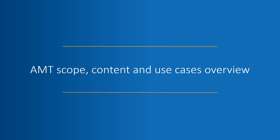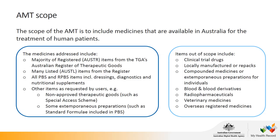Moving on to AMT scope, what it contains, and some use cases. The scope of the AMT is to include medicines available in Australia for the treatment of human patients. The medicines addressed include the majority of registered items from the TGA's Australian Register of Therapeutic Goods, and many listed items. All PBS and RPBS items are included. This covers items such as dressings, diagnostic strips, and nutritional supplements, and any other items as requested by users — for example, some non-approved medicines accessed under the special access scheme.